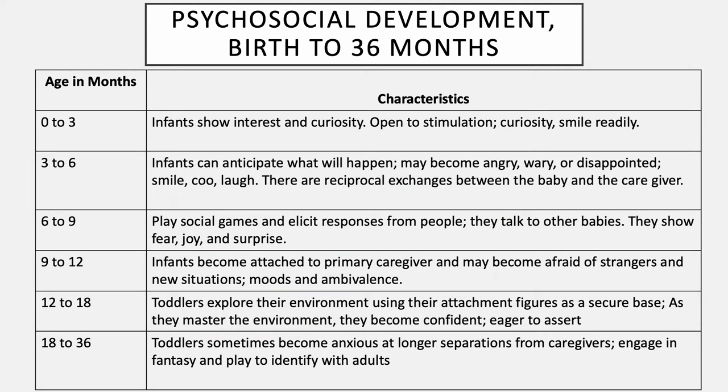Psychosocial development from birth to 36 months can be characterized by some age groups. Zero to three months: infants show interest and curiosity, are open to stimulation, and smile readily. From three to six months, infants can anticipate what will happen. They may become angry, wary, or disappointed. They may smile, coo, or laugh.